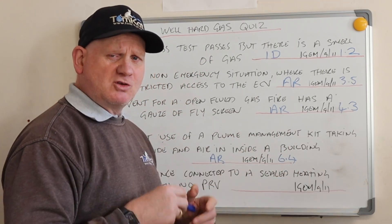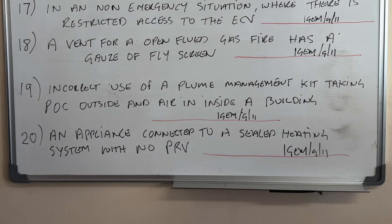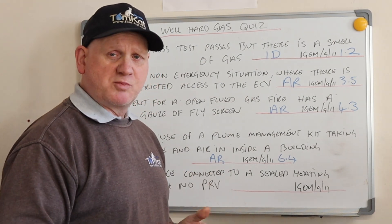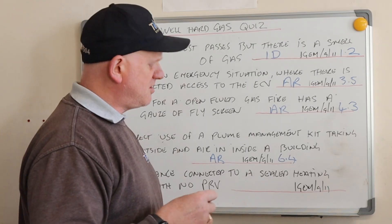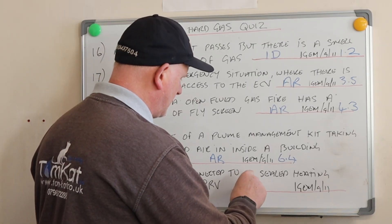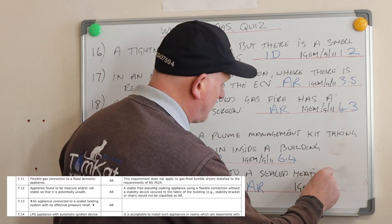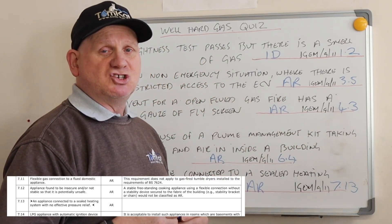Final question: an appliance connected to a sealed heating system with no pressure relief valve — a boiler connected to a sealed system with no pressure relief valve. If you classed it as ID, you'd be wrong, because again it's 'at risk,' and it's at section 7.13 in IGEM G11.